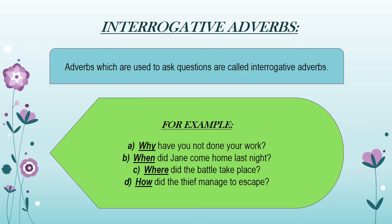B) 'When did Jane come home last night?' In the same way, the word 'when' is referring to a time — at what time — so it can be considered as an adverb of time. C) 'Where did the battle take place?' Here the word 'where' is referring to a place, which can be considered as adverb of place. D) 'How did the thief manage to escape?' Here the word 'how' refers to in what way, which can be considered as adverb of manner.